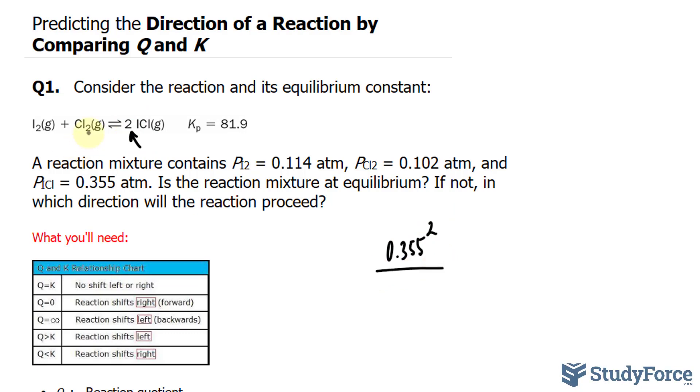And our reactants, their partial pressures are also given. Iodine is 0.114, and it doesn't have a coefficient at the front. That's being multiplied to chlorine gas. Its partial pressure is 0.102, and also it does not have a coefficient at the front. I'll call this QP.